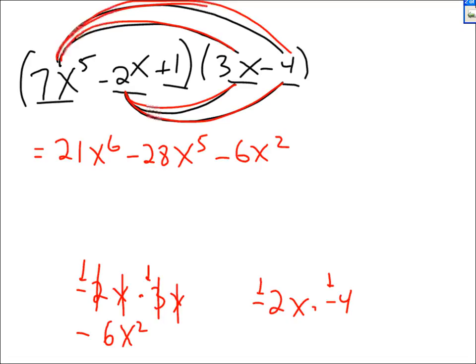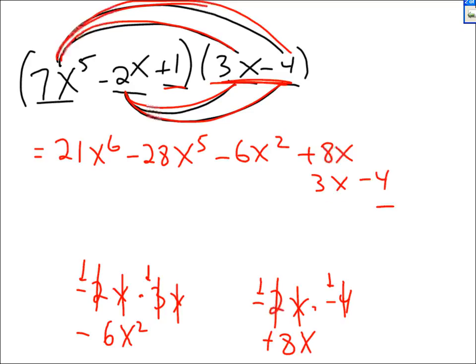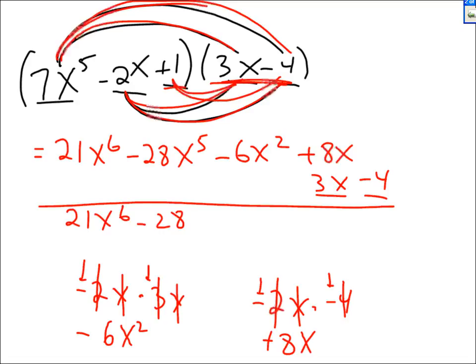Negative 2x times negative 4: a negative times a negative is positive, 2 times 4 is 8, times x, so positive 8x. Now 1 times the whole second bracket is just 3x minus 4. Combining like terms: 8x plus 3x is 11x, minus 4. The answer is 21x to the 6th minus 28x to the 5th minus 6x squared plus 11x minus 4, and it's already in descending order.